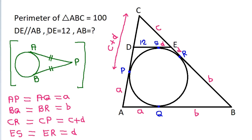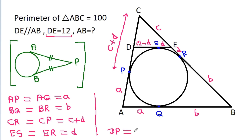And we have DE is 12. So DS will be 12 minus d. And from point D, DP will be equal to 12 minus d. So DP will be 12 minus d.